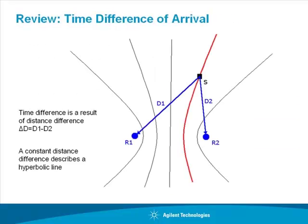Let's first review the basic principles of time difference of arrival geolocation. Here we have two receivers, R1 and R2, and a signal source S. The signal will arrive at the receivers with a time difference that is a result of the difference in distance between the signal source and each of the receivers. Knowing the difference in distance tells us that the signal emitter must be somewhere on the hyperbolic line shown in red.